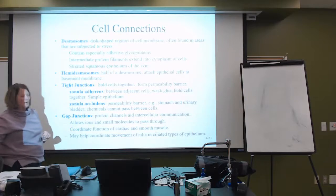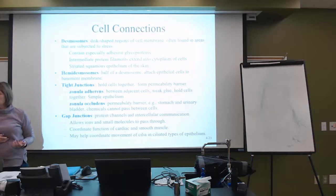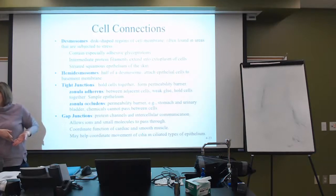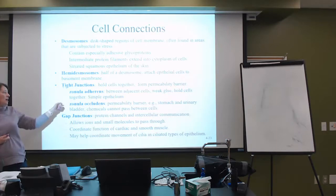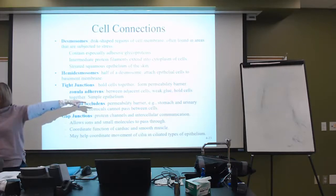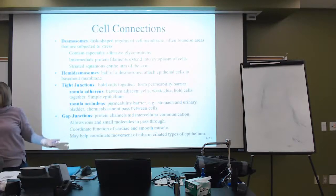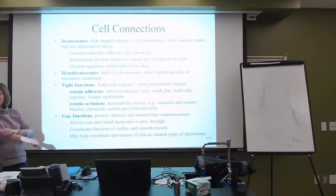The zonula occludens helps create permeability barriers — for example, the stomach. As we eat, the stomach pH is very low, about 2, and we do not need that pH leaking out of that organ. This type of connection holds those cells together so that acidic material does not escape into the body. The same applies to the bladder — the acidity of urine is kept from moving out. Occlude means to keep out.